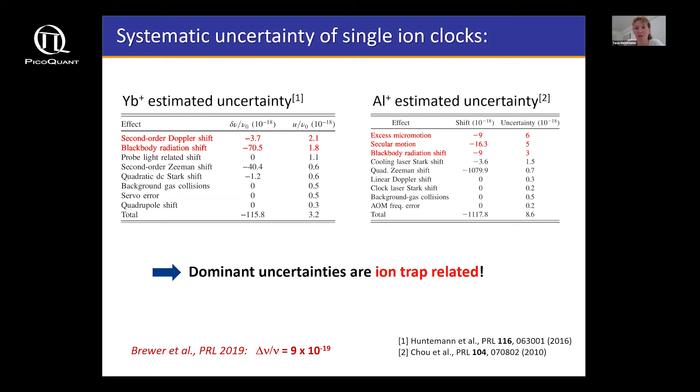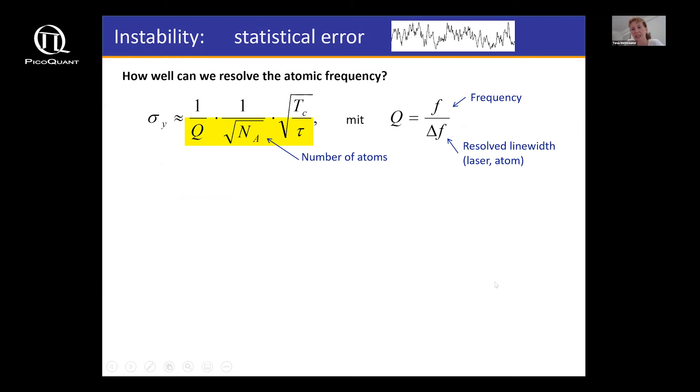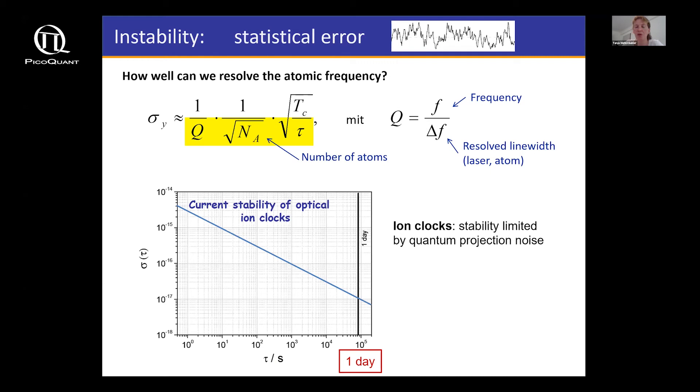I will not go into detail here, just to show you, if you build a clock, you have to think about many systematics that can change your atomic frequency. Usually you put up such an uncertainty budget, some budget keeping. What I highlighted in red here tells you that the biggest points in terms of uncertainty limiting our clock performance nowadays are actually ion-trap-related. So building a very good ion trap is still a big issue.